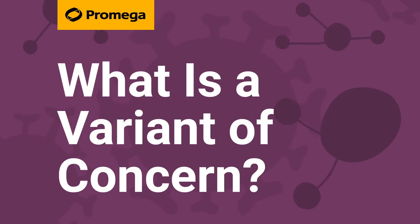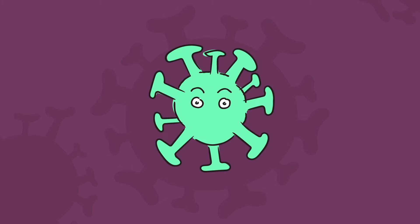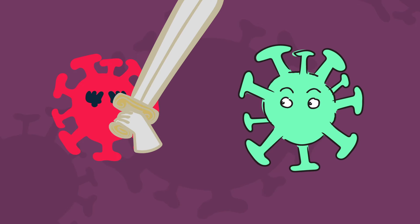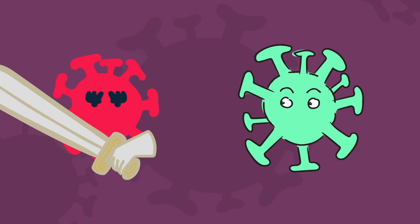What is a variant of concern? A variant of concern is an emerging viral variant that has been shown to have evolutionary advantages over the historical forms of a virus.